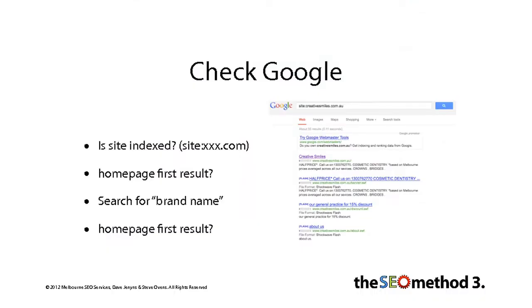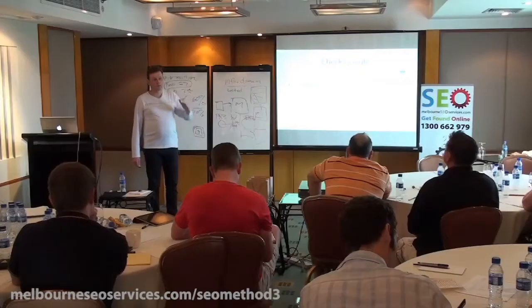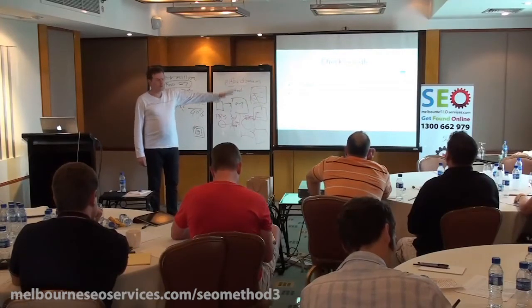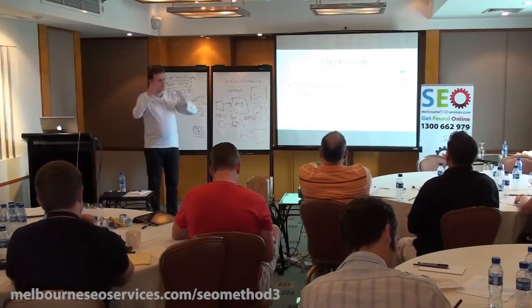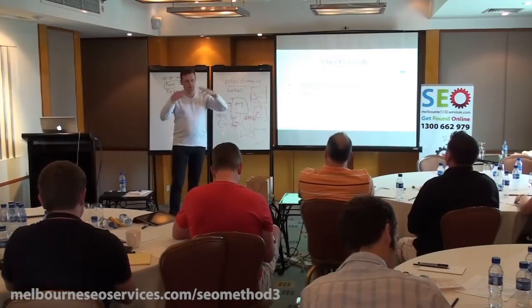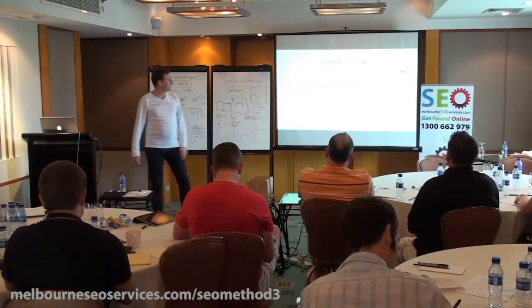So how we do this — this is just to give you a flavour of the way that the audit works. We're working down the spreadsheet. We check Google: is the site indexed? We run the site command — whatever the site is in Google — does it show up? That's the sort of level of test we're looking at. Is the homepage the first result? We want to make sure we're not having issues where, if the homepage is not the first result, we've probably got some architectural issues or possibly a penalty.